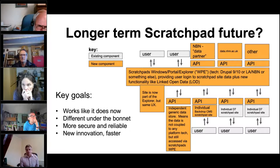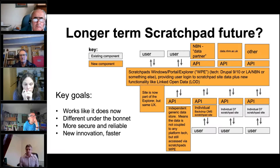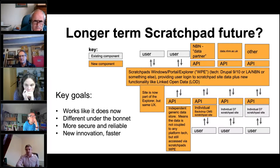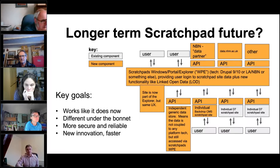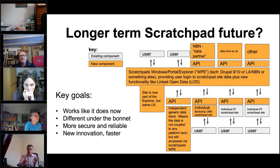The key goals: works like it does now, but different under the bonnet — meaning more secure and reliable. We've had some issues in recent weeks and want to embrace new technology to keep those to a minimum, while also doing new and innovative things. Linked open data, micro-publishing — some of these I'm still exploring, but linked open data could mean connecting different datasets and fostering more collaboration between individual Scratchpad sites.